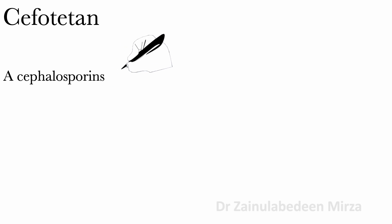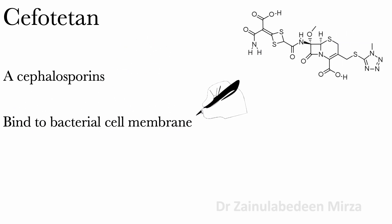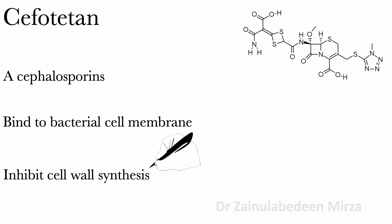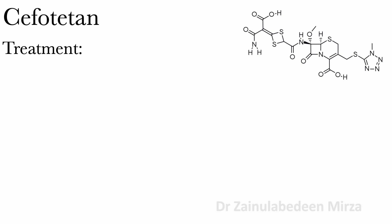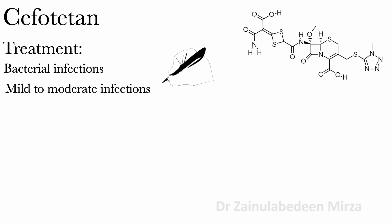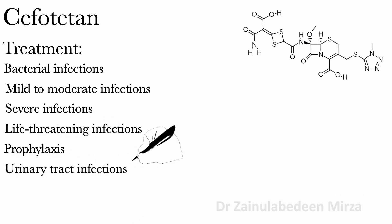Ziputetan is a cephalosporin antibiotic that binds to bacterial cell membrane and inhibits cell wall synthesis. Ziputetan is used to treat bacterial infections: mild to moderate infections, severe infections, life-threatening infections, prophylaxis, and urinary tract infections.